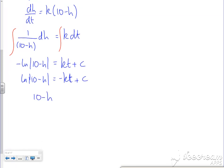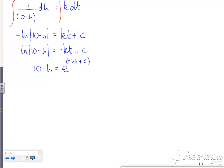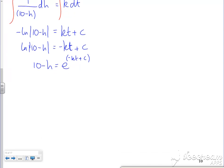Taking e of both sides gives 10-h = e^(-kt+c). Now this is a bit we need to simplify. e^(-kt+c) is the same if I split it.